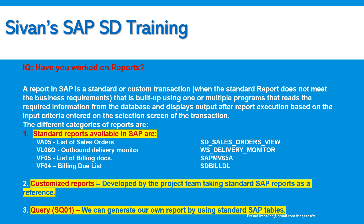For example, if a selection screen contains only customer, material, sales document, and dates with no plant information, and they request plant and shipping point to be added, we need to explore all possibilities for the standard program modification — like VA05, list of sales orders (SD_SALES_ORDERS_VIEW). Is it possible to make a change? If yes, with the help of the technical team, we provide the functional specification document, they make the change, we do end-to-end testing in development or quality systems, and once the client confirms everything is working, we move to production. There are different categories: standard reports, customized reports, and various others.